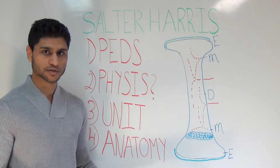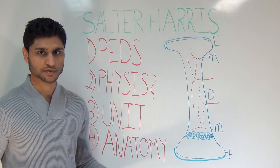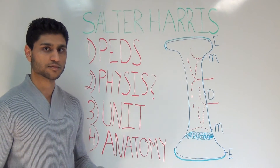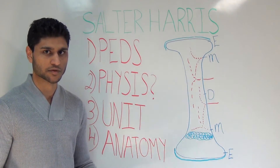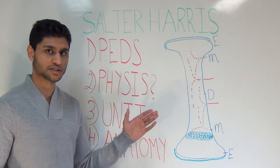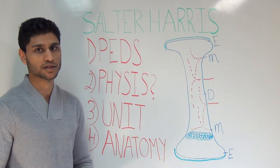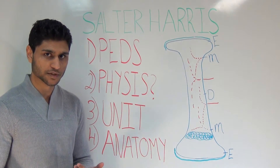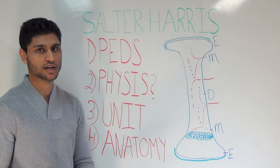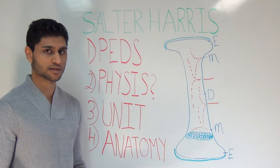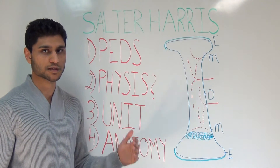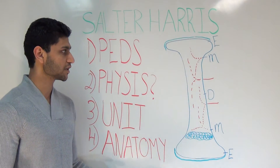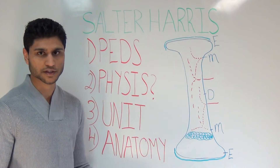Now we're ready to jump into the different types. And before we end the video, we're going to go through some of the newer classification systems that were added in addition to the Salter-Harris, namely the Rang-Zurin classification, which is really just type 6, and the Ogden classification, which is types 7, 8, and 9 of pediatric long bone fractures.